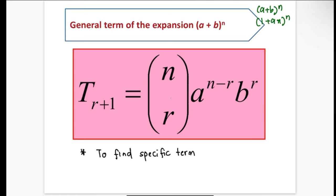Next, we will learn how to use T(r+1). We use this formula whenever the question asks you to find a specific term or a specific coefficient, meaning you don't have to expand the entire equation. The formula is: T(r+1) = nCr · a^(n−r) · b^r, where n is the power of the expansion, a is the first term, and b is the second term.